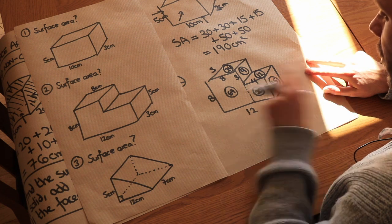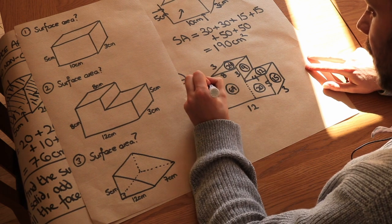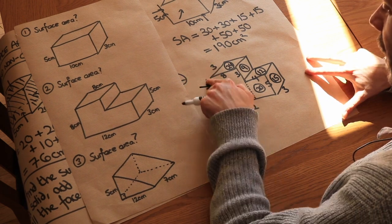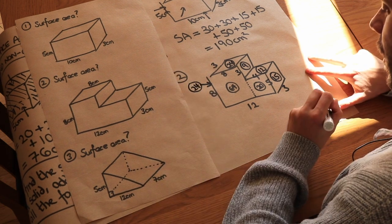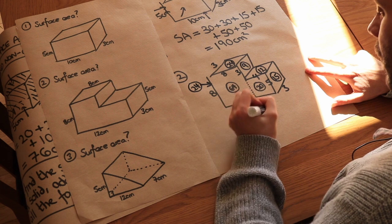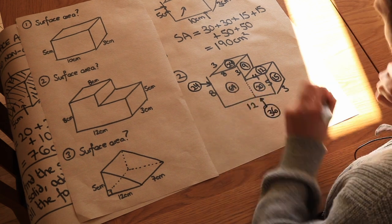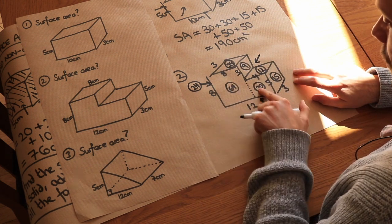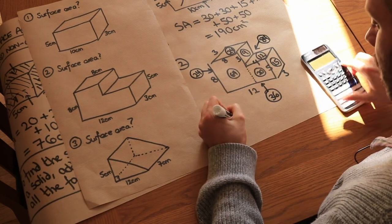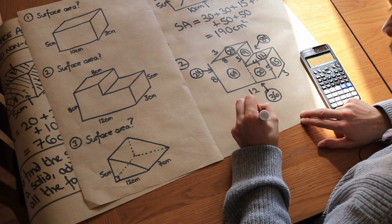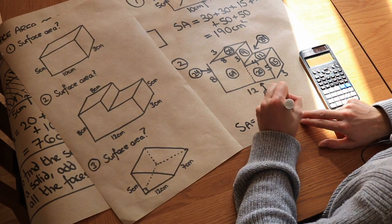The left face is 8 times 3, which is 24. The bottom face is 12 times 3, which is 36. The back face is the same as the front, totalling 84. Adding all faces together gives a surface area of 204 centimetres squared.